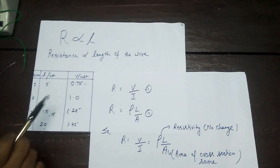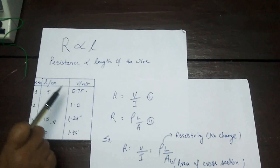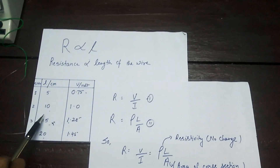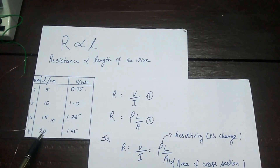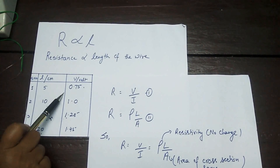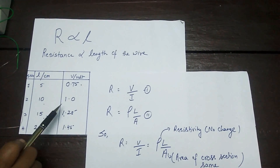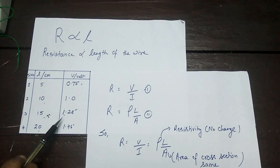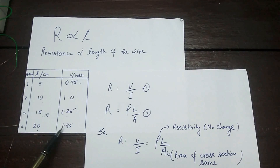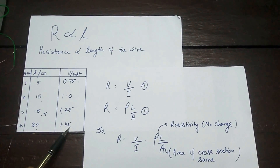This is our observation table. These are the lengths: 5, 10, 15, and 20 cm, and the respective voltages are 0.75, 1, 1.25, and 1.45 volt.